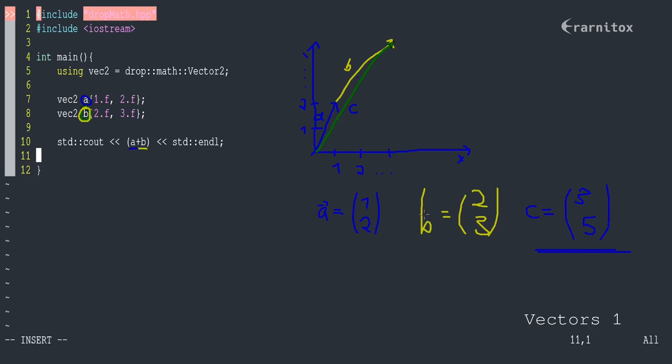We also want to do subtraction. A minus b would be the same thing, we would just subtract the single values from another. Subtract 2 from 1 and would get -1, and 3 from 2 would be also -1, and that would be the result.